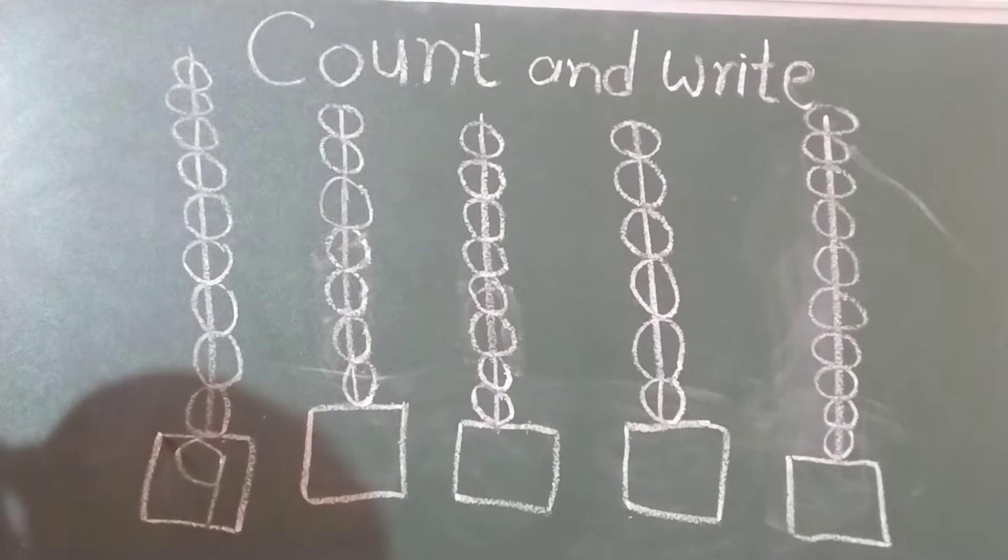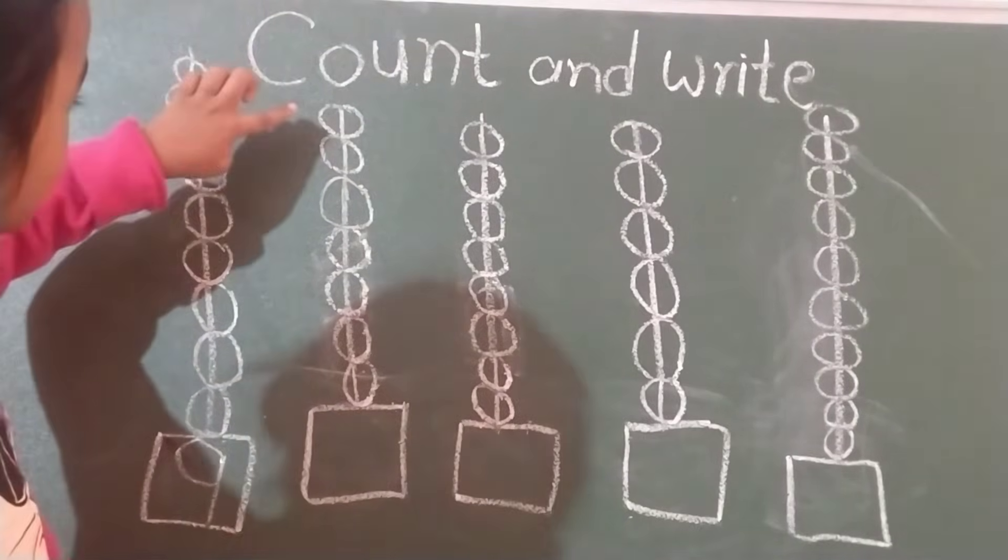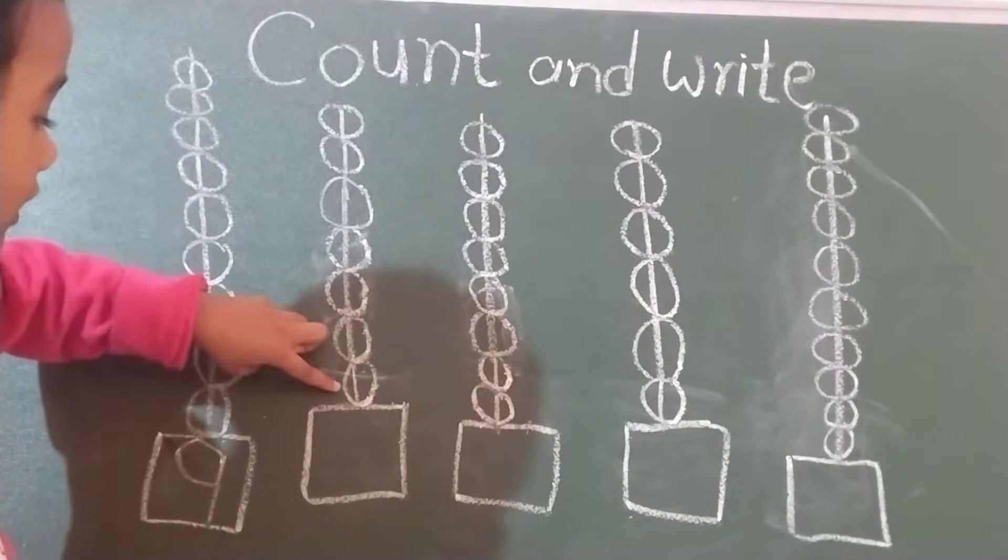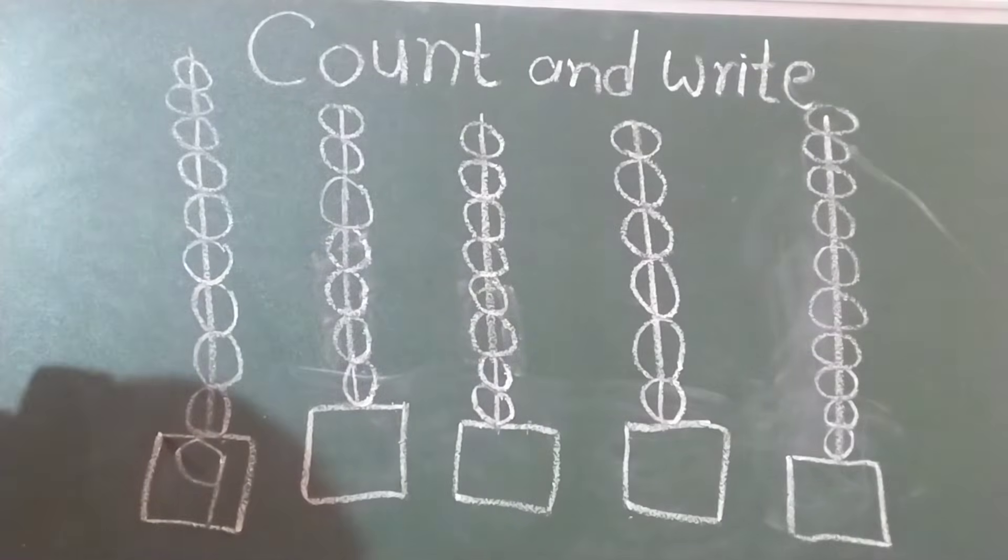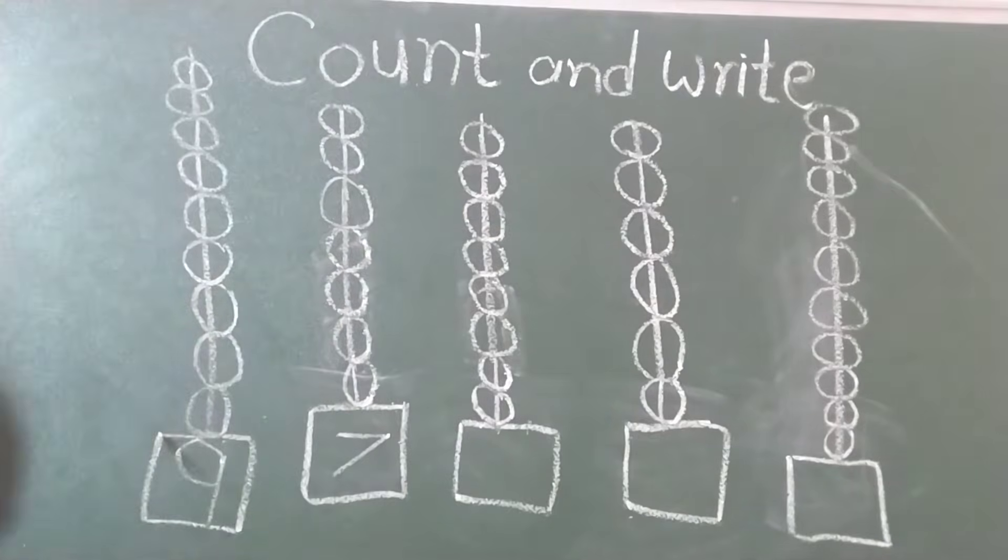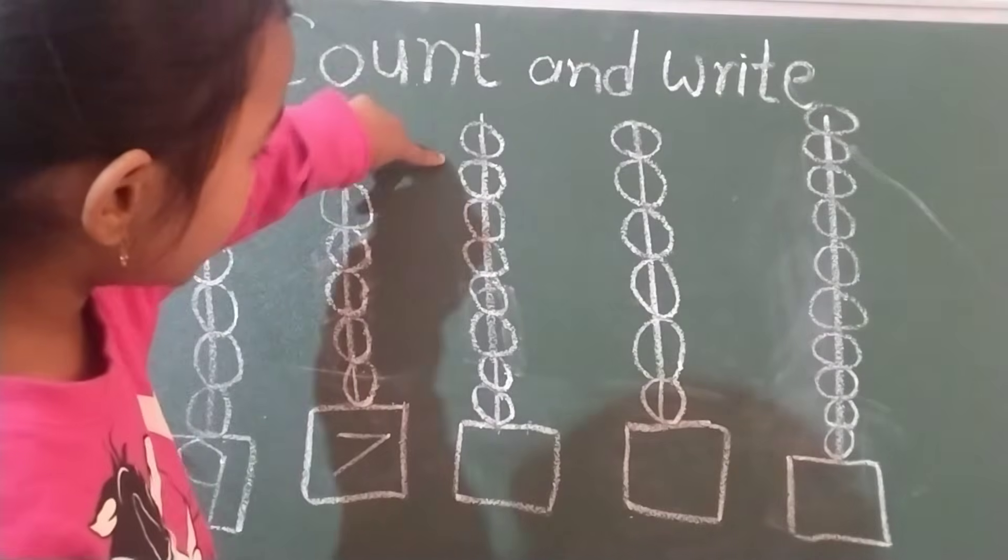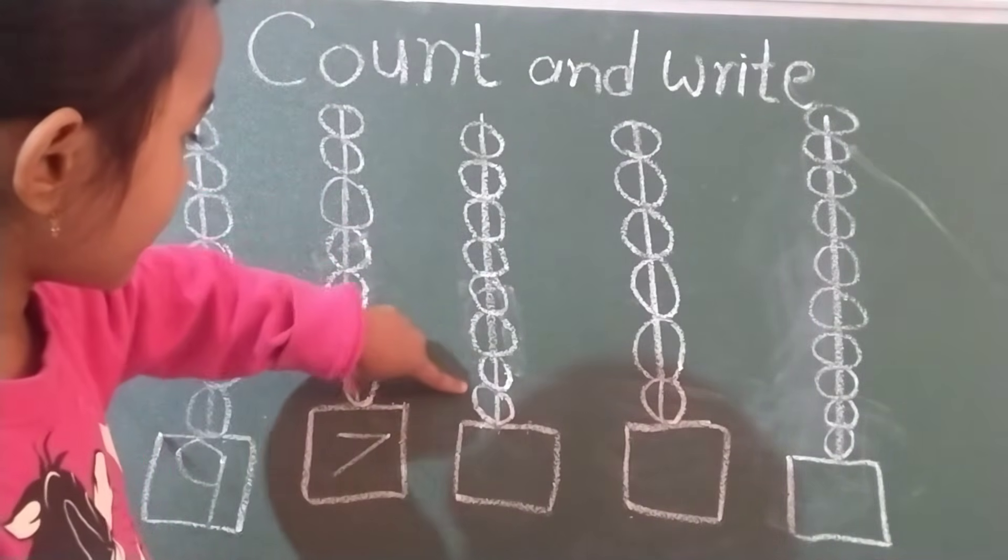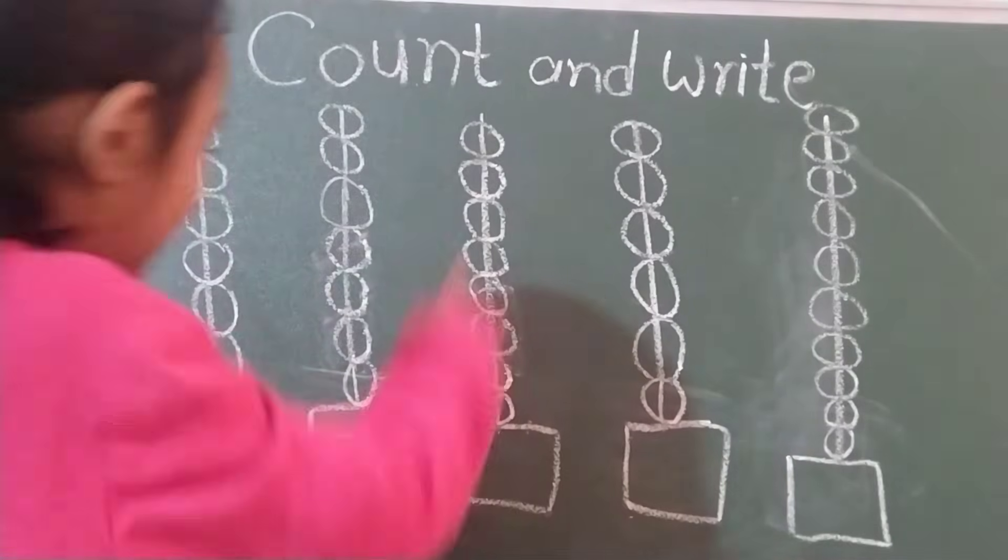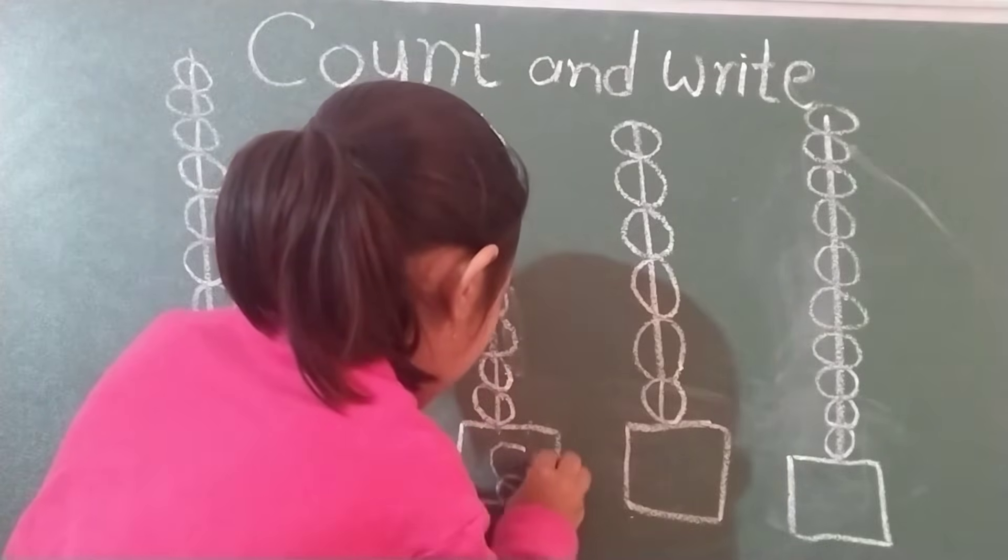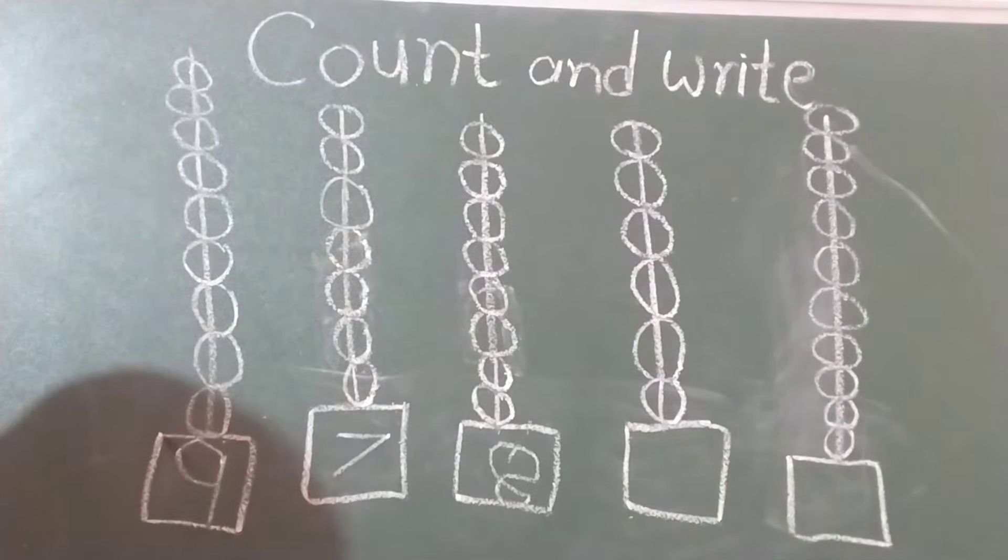Then count next. One, two, three, four, five, six, seven. How to write seven? Next one. One, two, three, four, five, six, seven, eight. Eight. Very good. Good job.